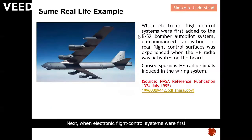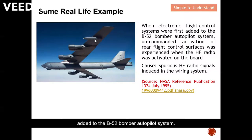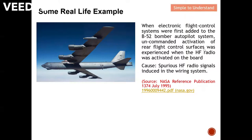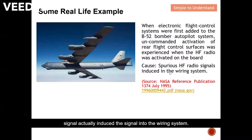When electronic flight control systems were first added to the B-52 bomber autopilot system, uncommanded activation of real flight control surfaces occurred whenever the HF radio was activated. The cause was that spurious signals from the HF radio induced signals into the wiring system.